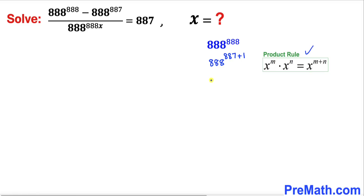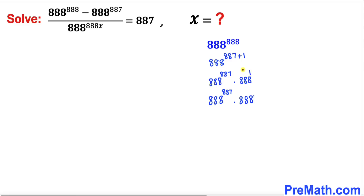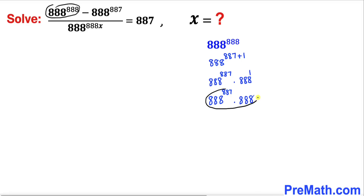So this expression could be written as 888^887 times 888^1. Now 888^1 is the same as 888, so I am going to replace this whole thing by this simplified form.